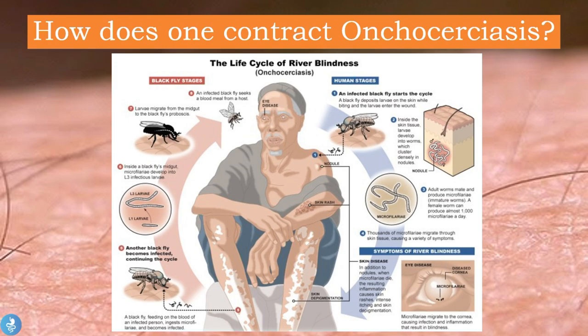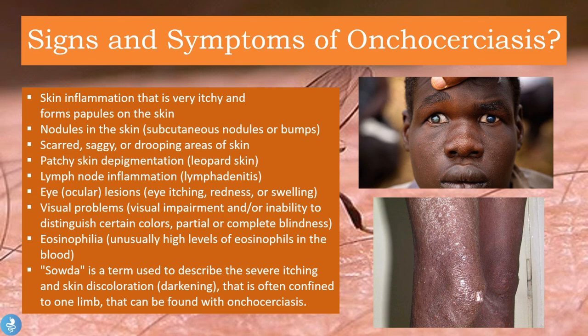Now let's explore the signs and symptoms in more detail. We have skin inflammation that is very itchy with the formation of papules — a papular rash due to deposits of microfilaria in the skin. We also have subcutaneous nodules or bumps, scarred, saggy or drooping areas of skin, and patchy skin depigmentation also called leopard skin. There is lymph node inflammation (lymphadenitis), eye or ocular lesions with intense eye itching, redness and swelling, and visual problems including visual impairment, inability to distinguish certain colors, and partial or complete blindness.